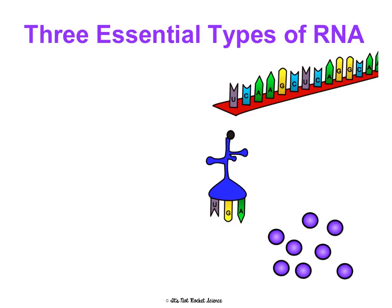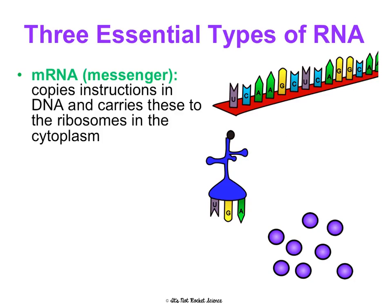There are three types of RNA that are critical for understanding these processes. First is messenger RNA, or mRNA. This is a single strand with exposed bases, and its purpose is to carry a copy of the instructions in DNA. It goes into the nucleus, gets the copy of DNA, leaves the nucleus, and carries these instructions to the ribosomes in the cytoplasm.